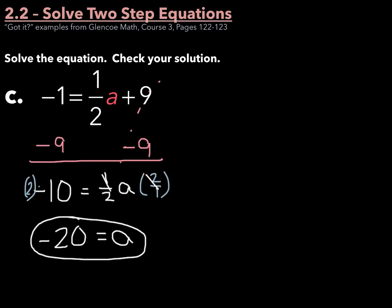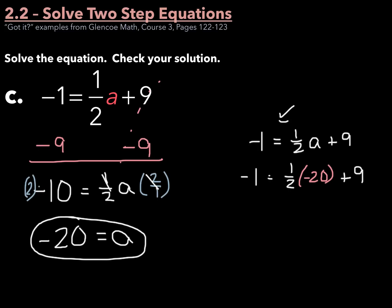But we won't know until we check. Negative 1 equals one-half a plus 9. Negative 1 equals one-half times our answer of negative 20 plus 9. So negative 1 is going to equal half of negative 20, which is negative 10, plus 9. And sure enough, negative 10 plus 9 is negative 1, equals negative 1. So negative 20 equals a.